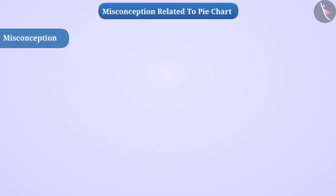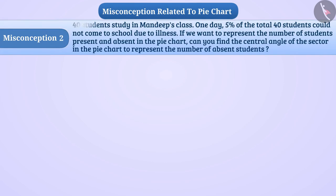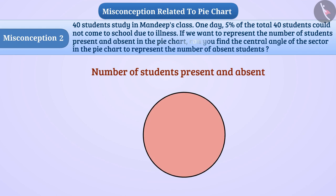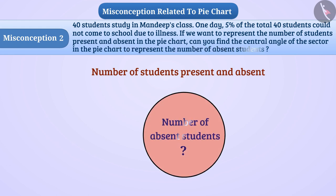Misconception 2: 40 students study in Mandeep's class. One day, 5 percent of the total 40 students could not come to school due to illness. If we want to represent the number of students present and absent in a pie chart, can you find the central angle of the sector to represent the number of absent students?